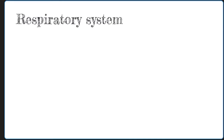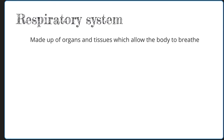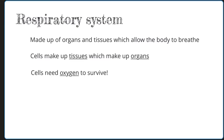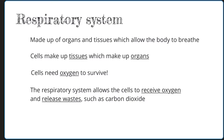The respiratory system is made up of organs and tissues which allow the body to breathe. In order for the cells, which make up tissues and organs, to survive, they rely on a constant flow of oxygen. It is also crucial that they release wastes, such as carbon dioxide. The cells rely on the work of the respiratory system, which actually works together with the cardiovascular system for some of this function. However, for this video, we are going to focus on the function of the respiratory system.